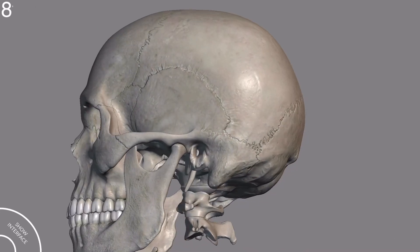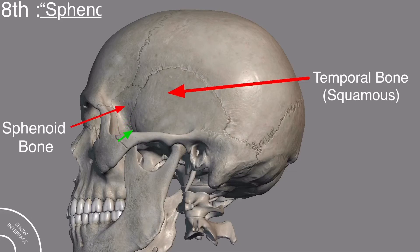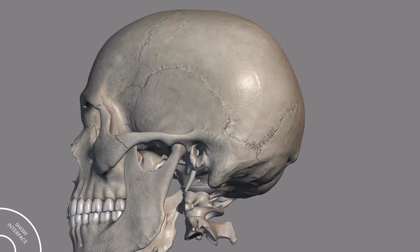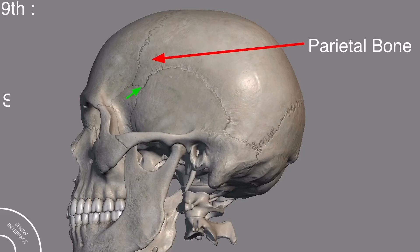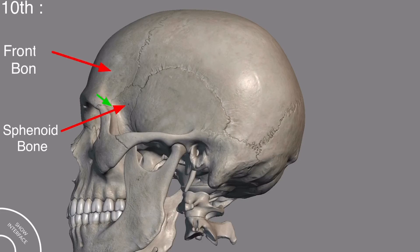The suture present between the squamous part of the temporal bone and the sphenoid bone is called the sphenosquamous suture. The suture present between the parietal bone and the sphenoid bone is called the sphenoparietal suture. The suture present between the sphenoid bone and the frontal bone is called the sphenofrontal suture.